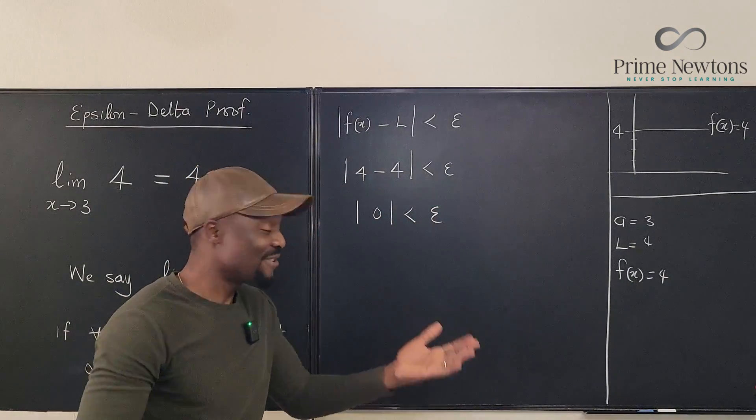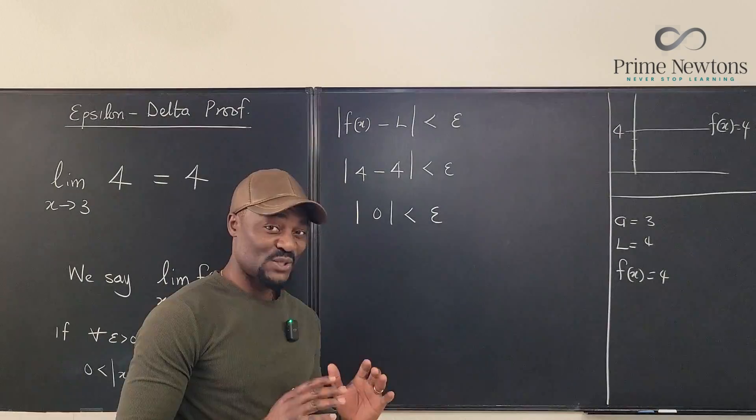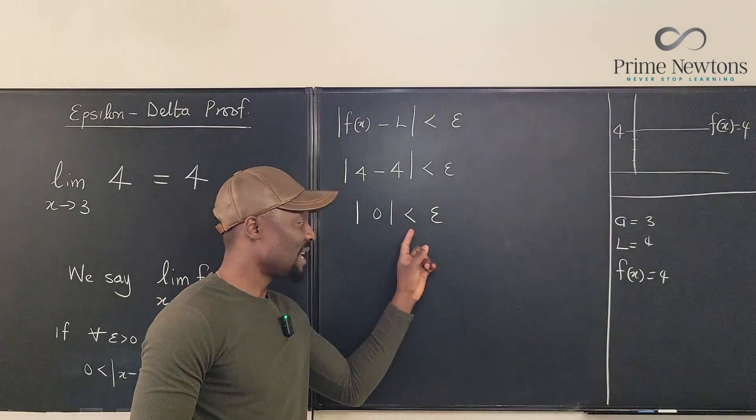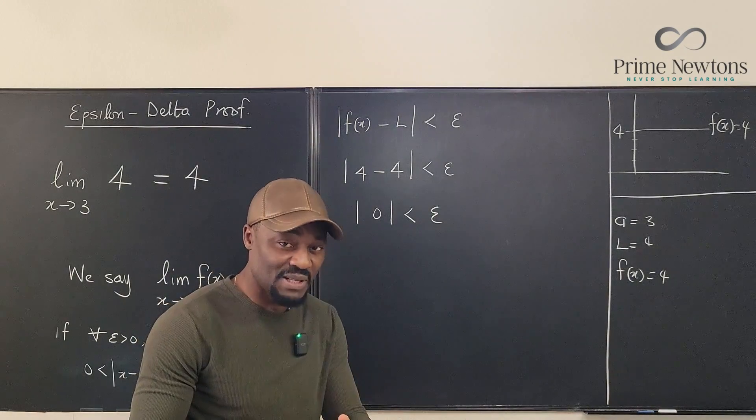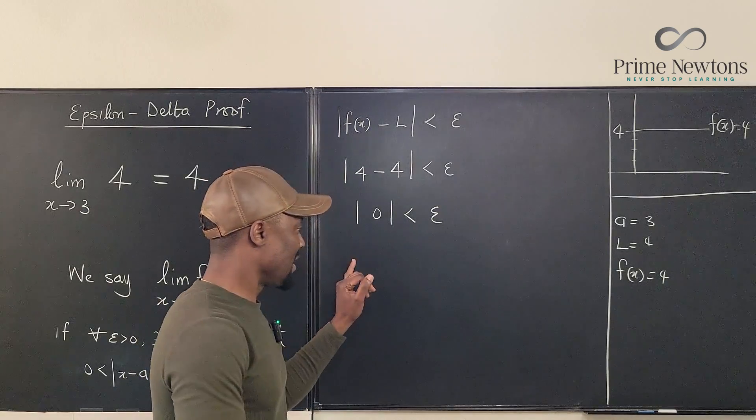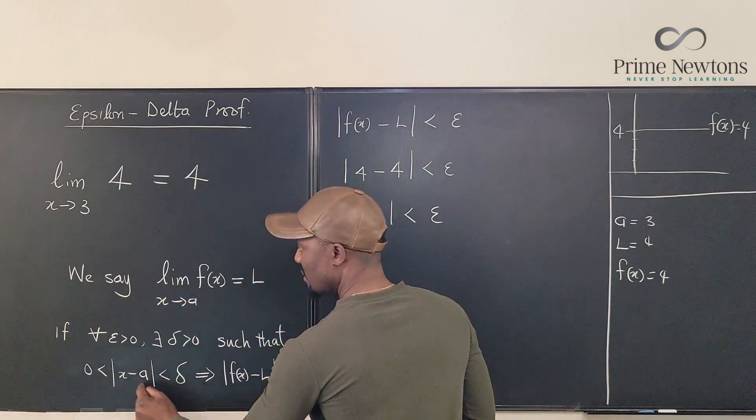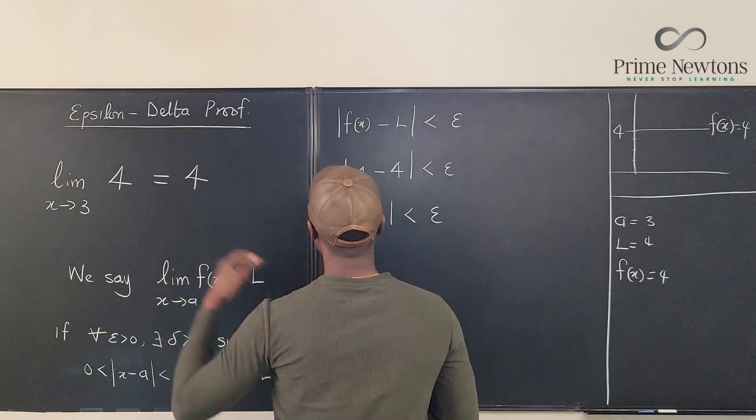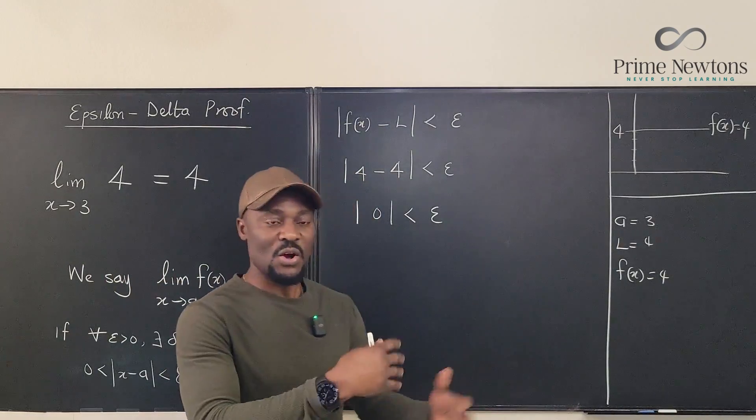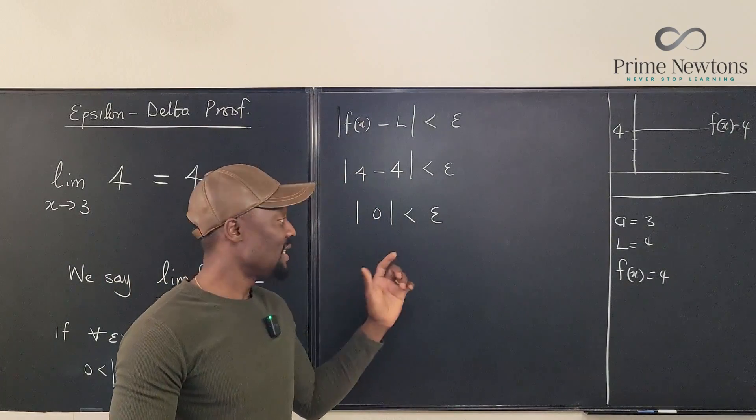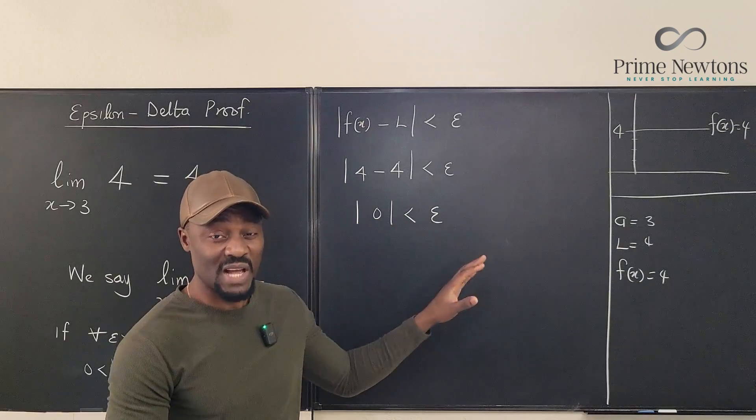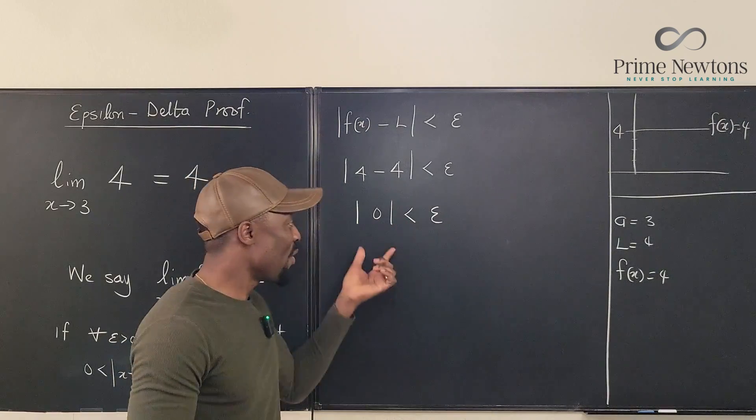You just stop here because there is no x in the picture. So what we have here is 0 is less than epsilon. Remember, typically we need something like x minus 3. We need x minus a. x minus 3 is supposed to be less than or some multiple of x minus 3 is less than epsilon. Then we divide both sides. But at this point, we don't have any x.